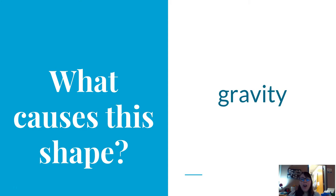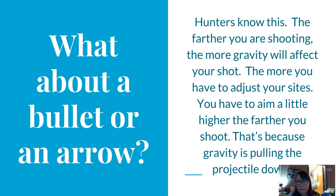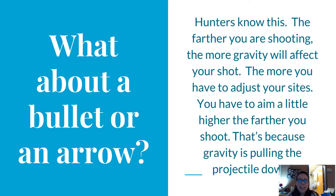So what causes this shape? It's gravity. Gravity is pulling down on everything on Earth. What can be a little confusing is when something is going super, super fast — you can't actually see that curve.